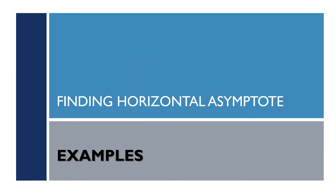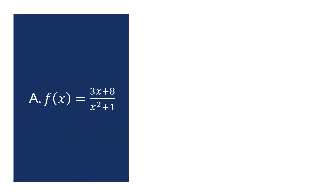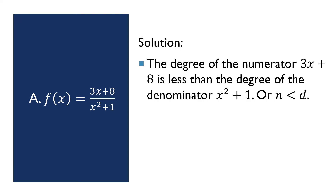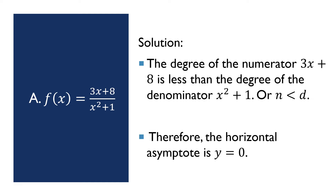Let's find the horizontal asymptote by answering the following examples. We have the function f(x) = (3x + 8) / (x² + 1). The degree of the numerator 3x + 8 is less than the degree of the denominator x² + 1, so n is less than d. Therefore, the horizontal asymptote is y = 0 — no computation needed, automatic.